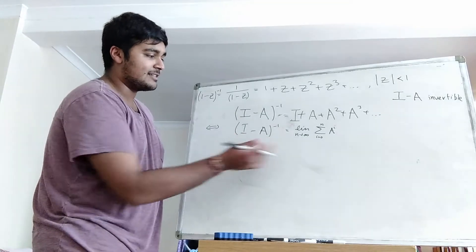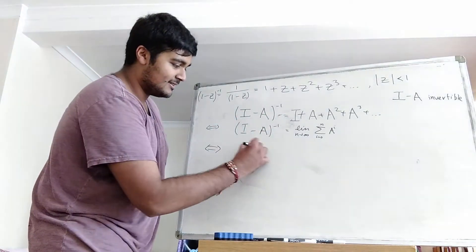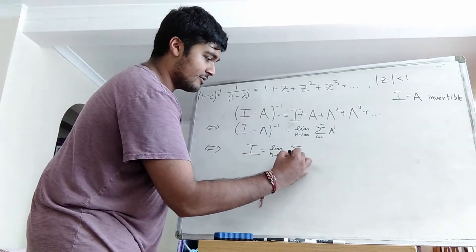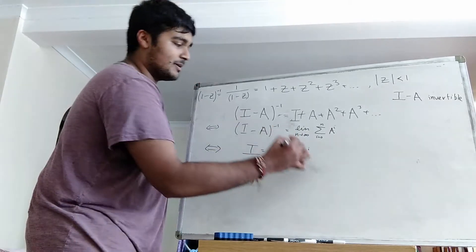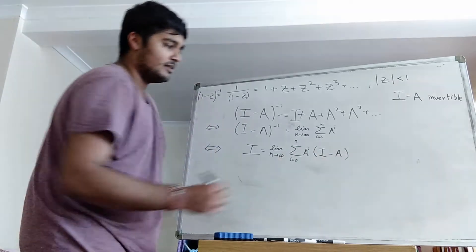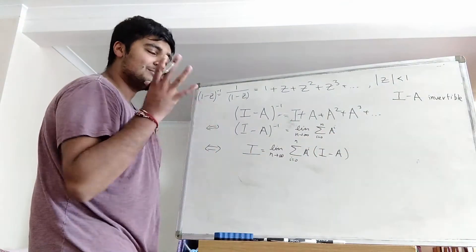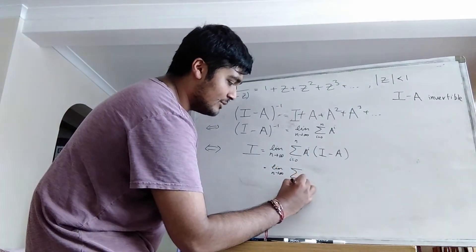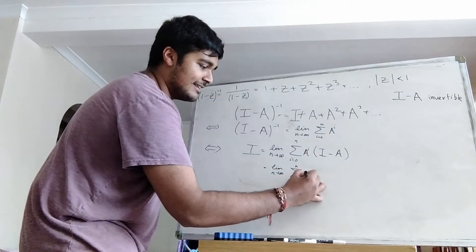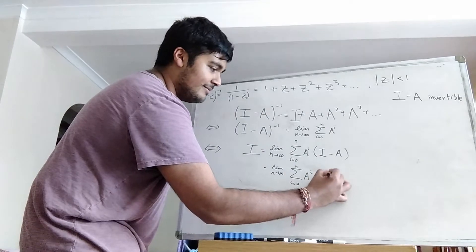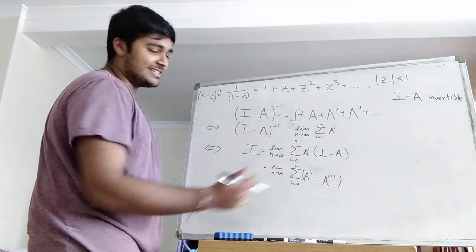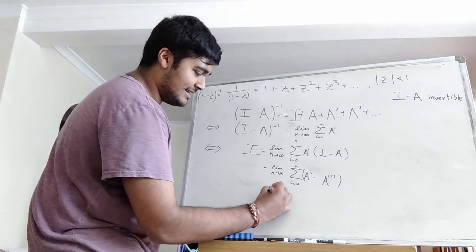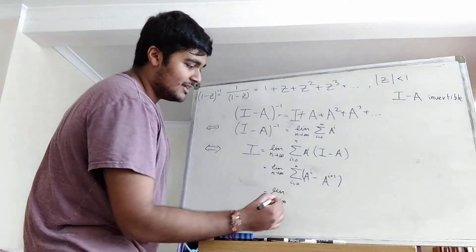Now let's multiply both sides by I minus A. On the left-hand side we'll just be left with the identity matrix. On the right-hand side we've got the limit as n goes to infinity of the sum from i equals 0 to n of A to the i, multiplied by I minus A. And perhaps you can see here, we're going to get some sort of telescoping series. That's the limit as n goes to infinity of the sum from i equals 0 to n of: A to the i times I is just A to the i, minus A to the i plus 1.